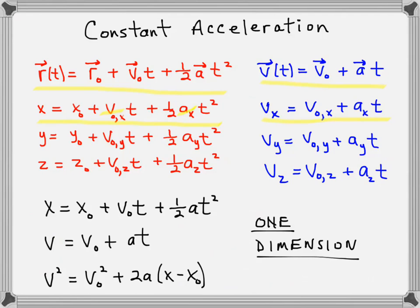Correspondingly, y equals the initial y coordinate plus the initial velocity in the y direction times time, plus one-half the acceleration in the y direction times time squared. The velocity in the y direction follows the same form. Similarly, the z coordinate at any time and the velocity in the z direction at any time follow the same pattern.